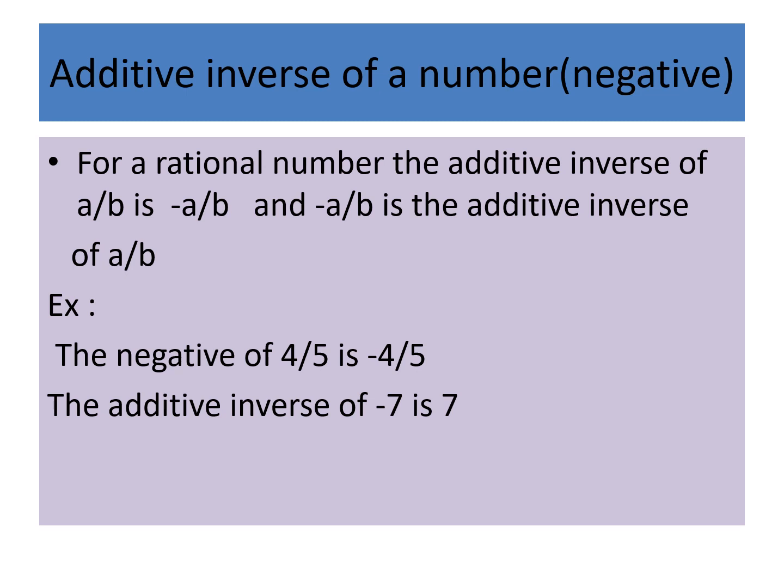The additive inverse of a number is its opposite sign. If the number is positive, the inverse is negative, and vice versa. For example: the additive inverse of 4/5 is −4/5; the additive inverse of −7 is 7; the additive inverse of 1 is −1; and the additive inverse of 4 is −4.